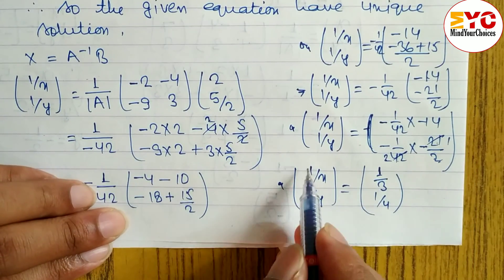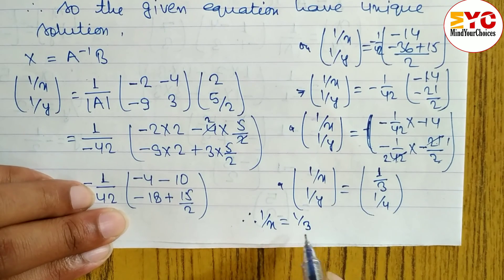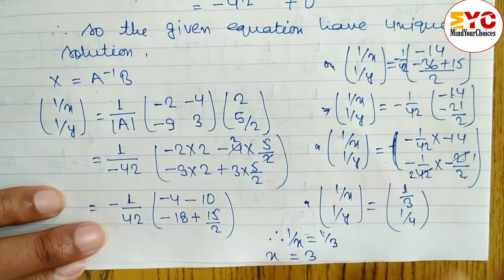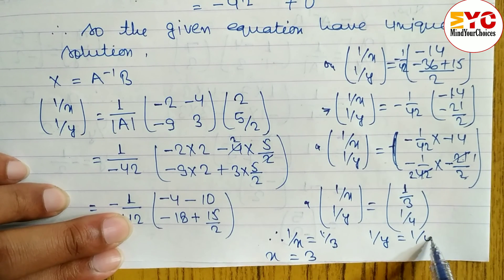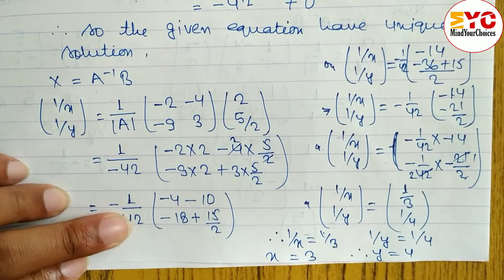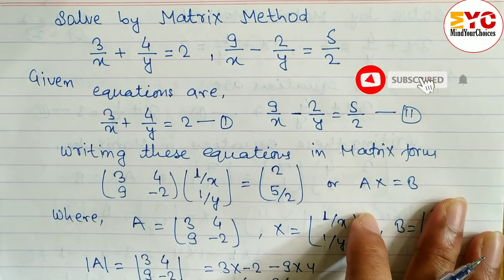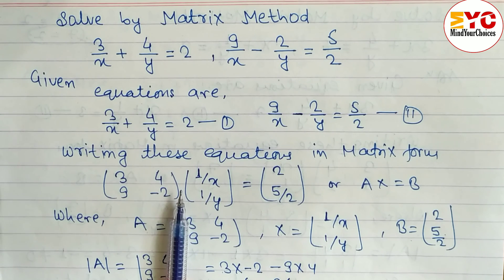We need the value of x and y, not 1/x and 1/y. From 1/x = 1/3, cross-multiplying gives x = 3. From 1/y = 1/4, cross-multiplying gives y = 4. So the answer is x = 3 and y = 4. If you understood this question, please hit the like button, subscribe to the channel, and hit the bell icon for notifications. You can also join my Facebook page or send questions via WhatsApp — details are in the description. Thanks for watching and have a great day!